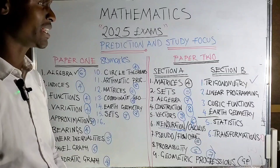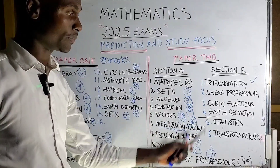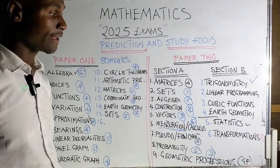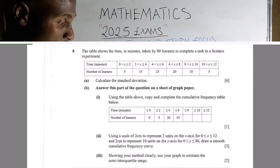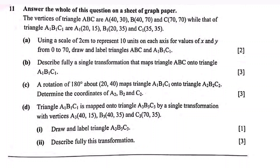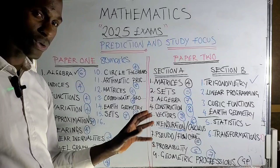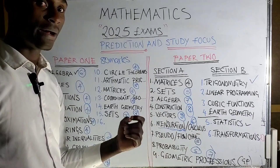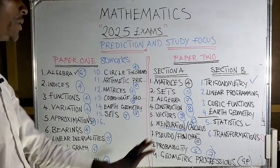Statistics is very simple as well. The first part is standard deviation, the second part involves completing a cumulative frequency or relative cumulative frequency curve, and the last question is usually about percentiles or quartiles. You should also familiarize yourself with grouped data in statistics. I prefer using the formula method for calculating standard deviation rather than the table method.